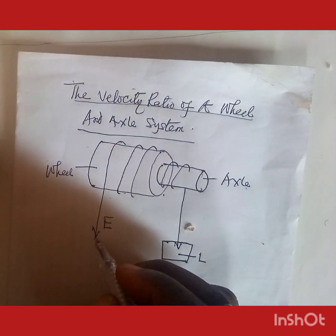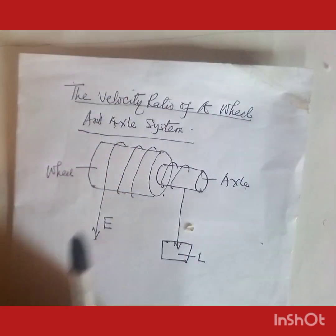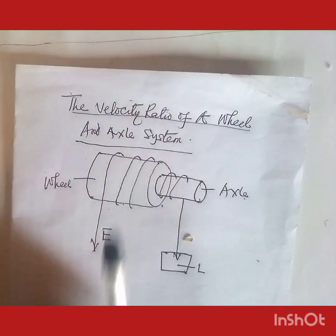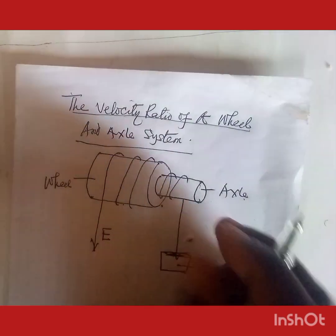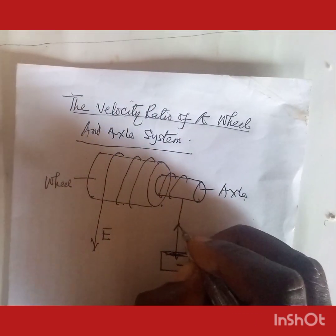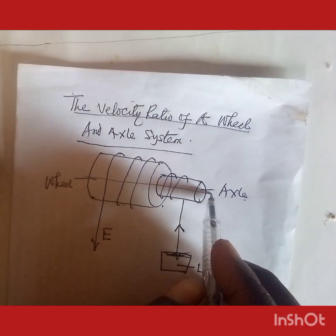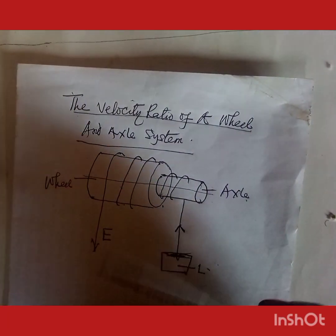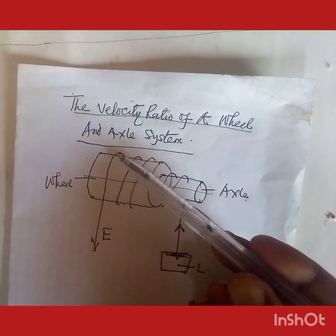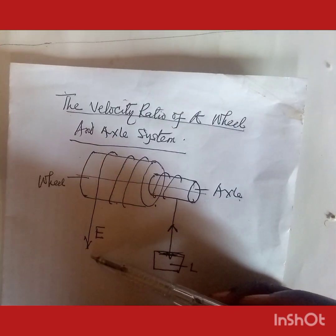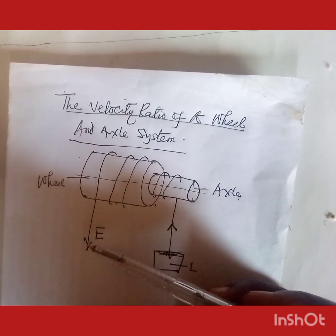As the effort is applied and pulled downwards, the load actually goes up. Because the wheel and axle have the same axis, the number of turns made by the wheel is equal to the number of turns made by the axle.